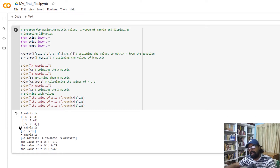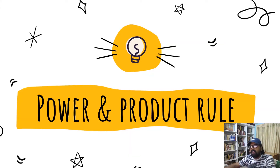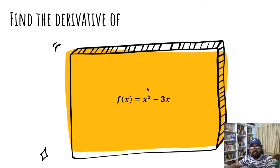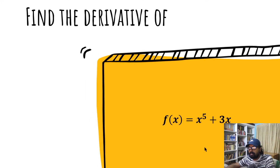If you have any doubts, comment and reply. This is our main video — how do we handle the differentiation in Python? We cover the Power Rule and Product Rule. For the power rule, I have an example: f of x is equal to x raised to 5 plus 3x.